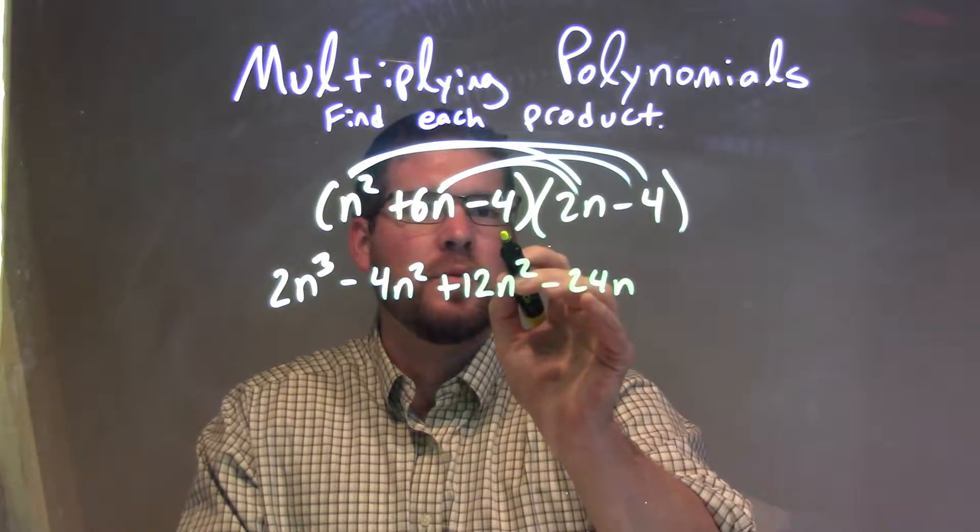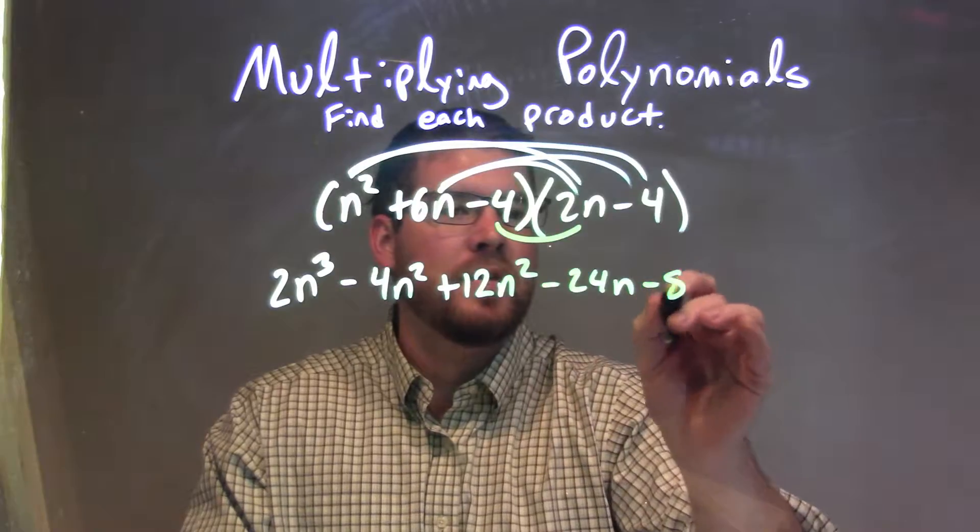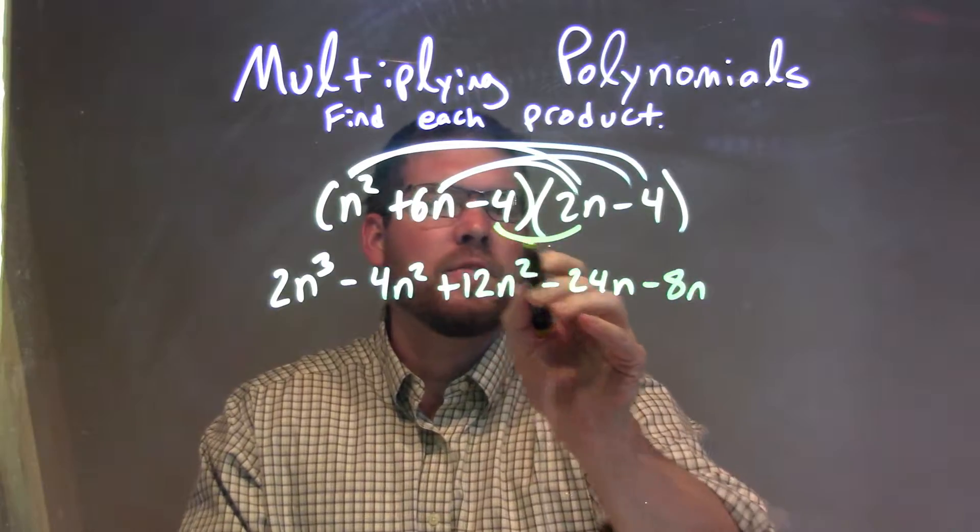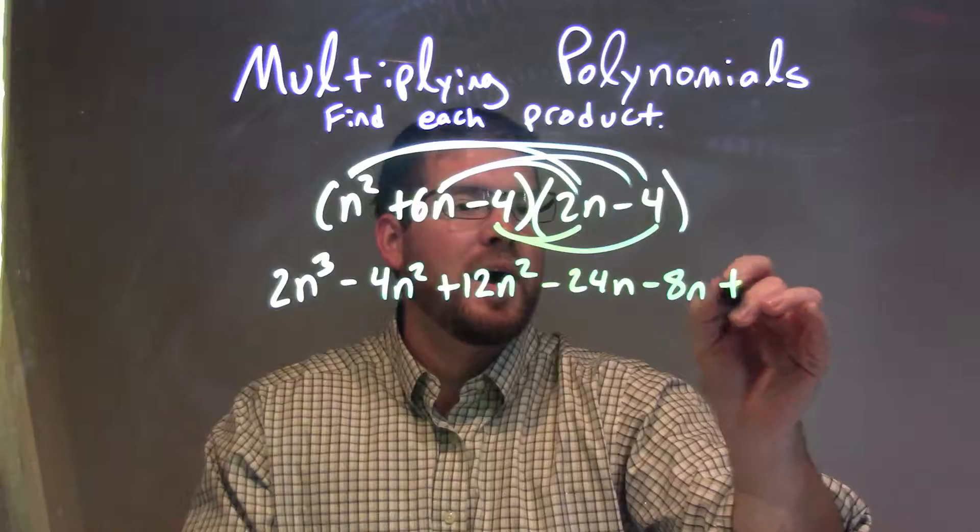Now we have here a minus 4, so we have minus 4 times 2n is minus 8n, and minus 4 times minus 4 is a positive 16.